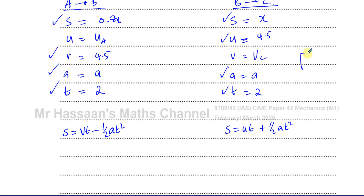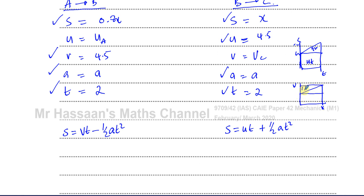On a velocity-time graph, the area under the curve is the distance traveled. The rectangle of base T and height U gives UT, and the triangle above it gives ½AT², so total area is UT + ½AT². Alternatively, the full rectangle has area VT, and you subtract the upper triangle of area ½AT², giving VT − ½AT². Both give the same distance — one adds the triangle to the rectangle, the other subtracts it from the large rectangle. So these two formulae are equivalent, but the formula sheet only has the first one.